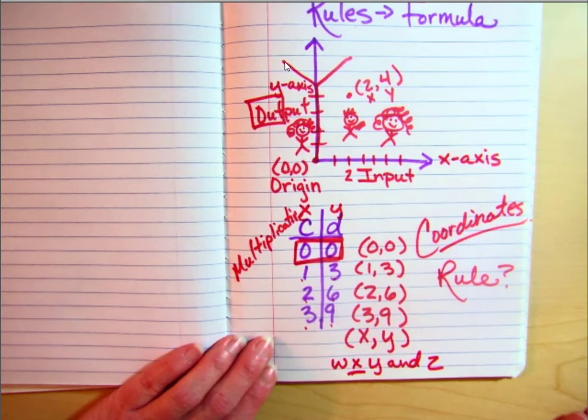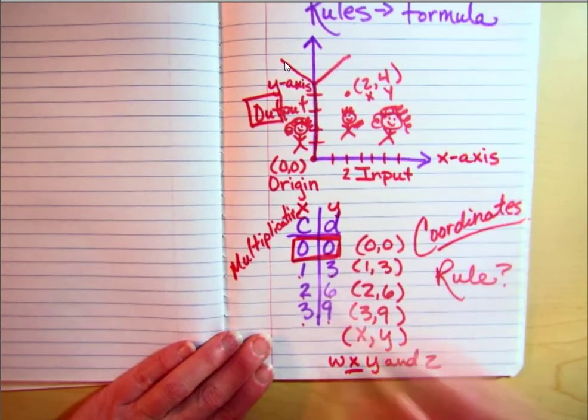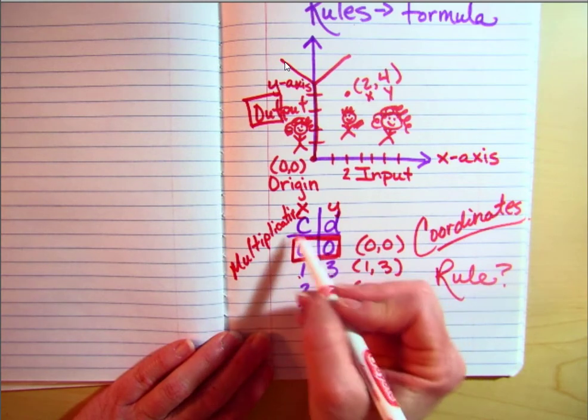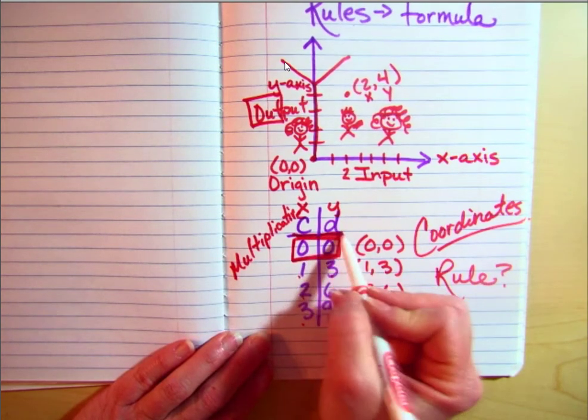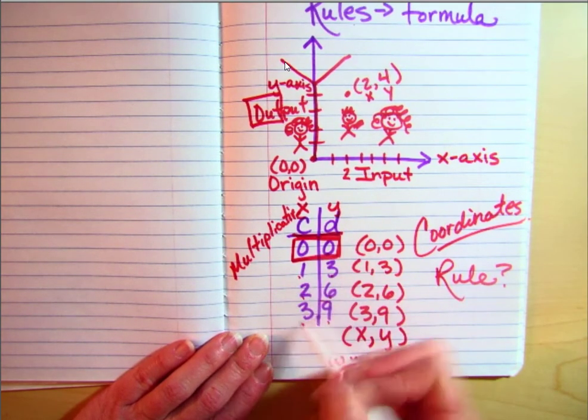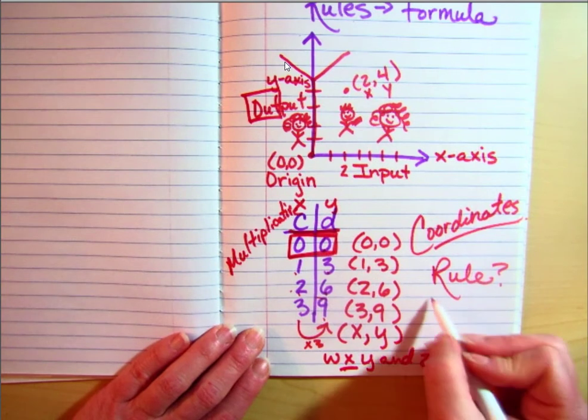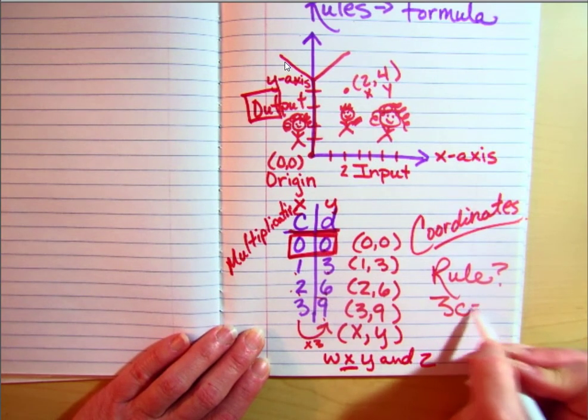Additive ones do not. You cannot have an additive graph that has 0, 0. So in this one I have to ask, what am I doing to c to get d? Well, it's pretty simple here: 1, 3, 2, 6. Each time I'm multiplying times 3. So my rule is 3 times c equals d.